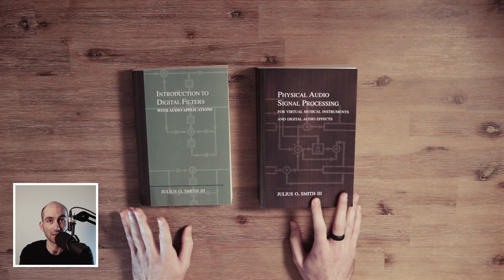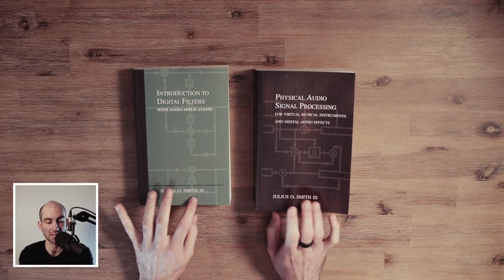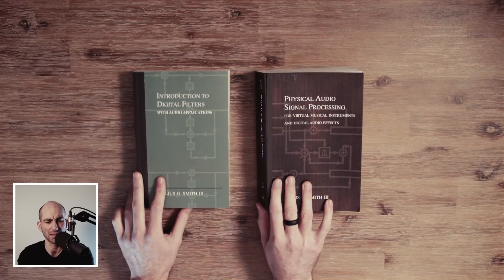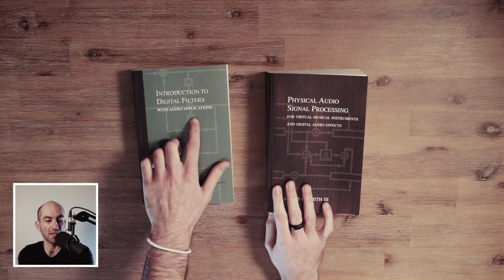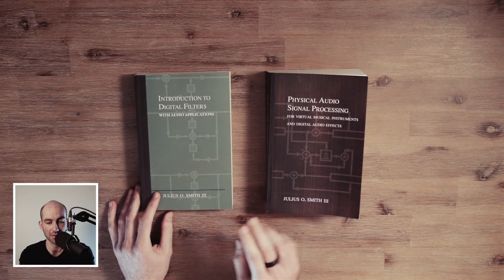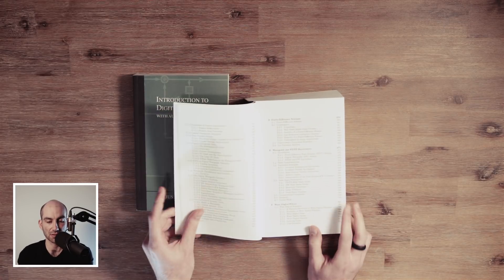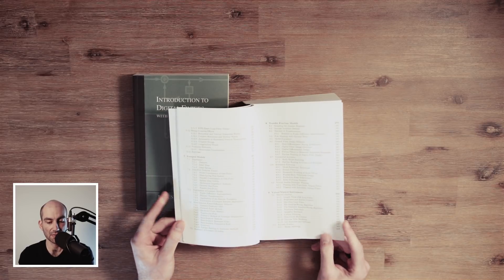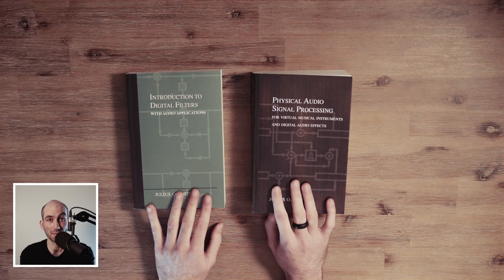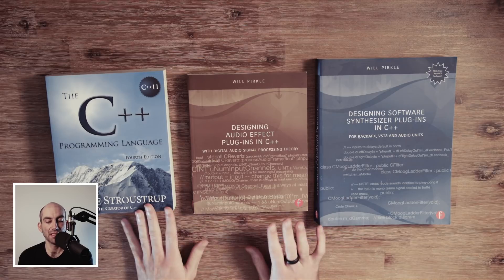Next we have two books from Julius Smith, who's sort of a god in the DSP world — a professor at Stanford who's written tons of great books. I only have the second and third volumes. The second is Introduction to Digital Filters — in this case 'filters' means effectively anything that can process a signal, not just traditional low-pass or high-pass filters. The third is Physical Audio Signal Processing, which is a really great bible for anything related to sound design especially physical modeling. Treat them like reference guides rather than novels, otherwise your head will explode.